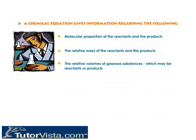Information from a chemical equation: A chemical equation gives information regarding the molecular proportion of the reactants and products, the relative mass of the reactants and products, and the relative volumes of gaseous substances which may be reactants or products.